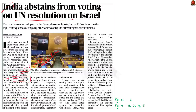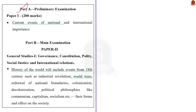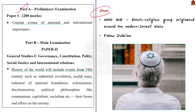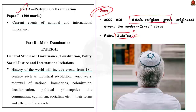Let us briefly learn about the Israel-Palestine issue and why India abstained from voting on this resolution. Jews or Jewish people originated as an ethnic and religious group in the Middle East around 2000 BCE, following a religion called Judaism. To conclude, Jews were an ethno-religious group who originated from the territory east of the Mediterranean Sea, near the present-day Israel.